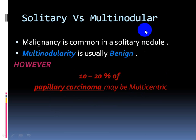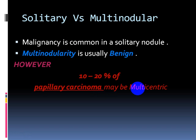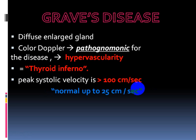Regarding solitary versus multinodular disease: in general, malignancy is more commonly associated with a solitary nodule, while multinodularity is usually benign. However, about 10 to 20% of papillary carcinoma nodules may be multicentric. So multinodularity is a suggestive but not definitive sign.